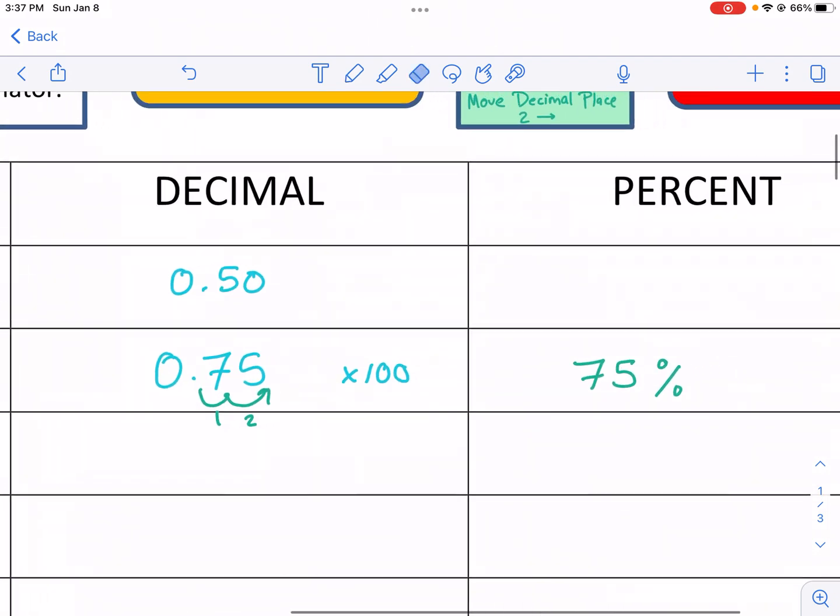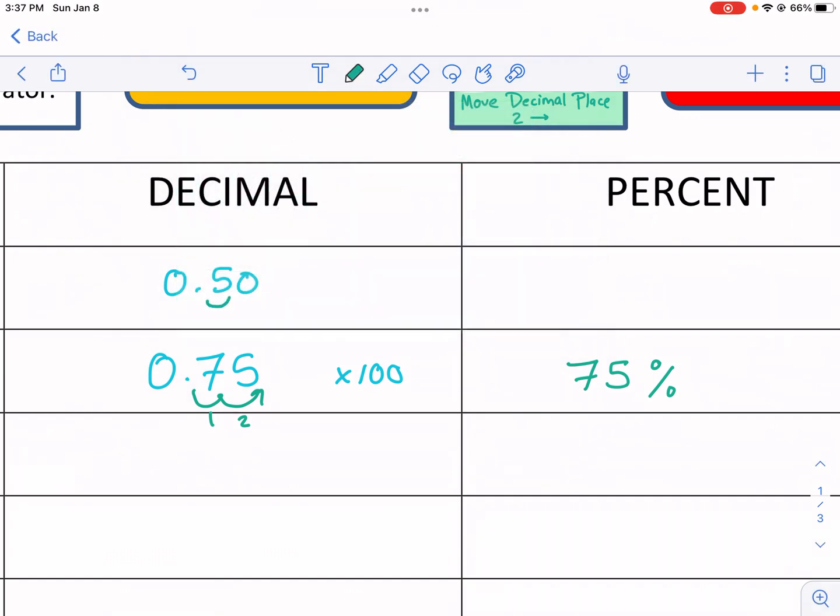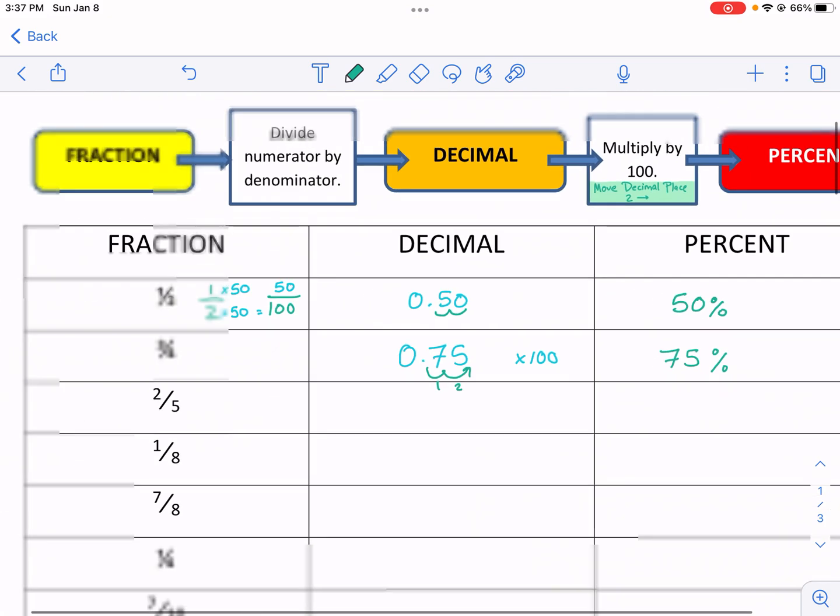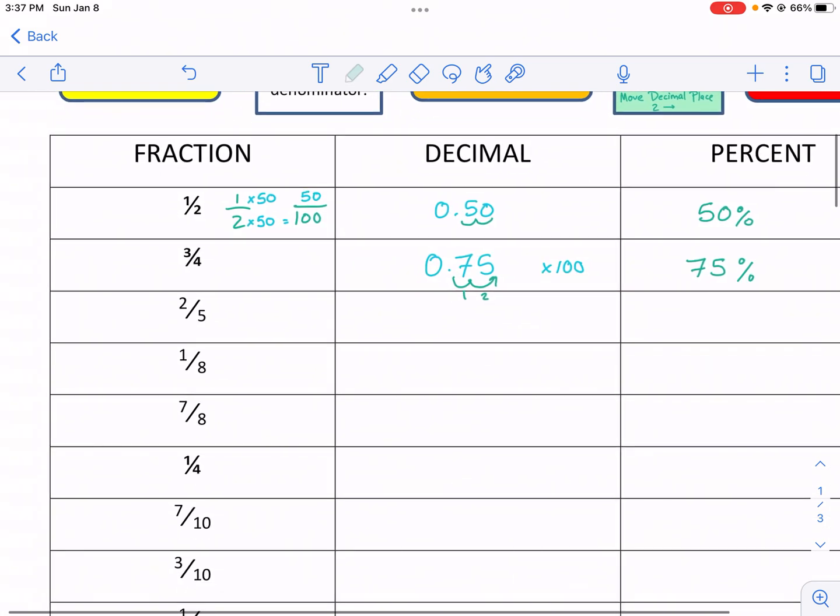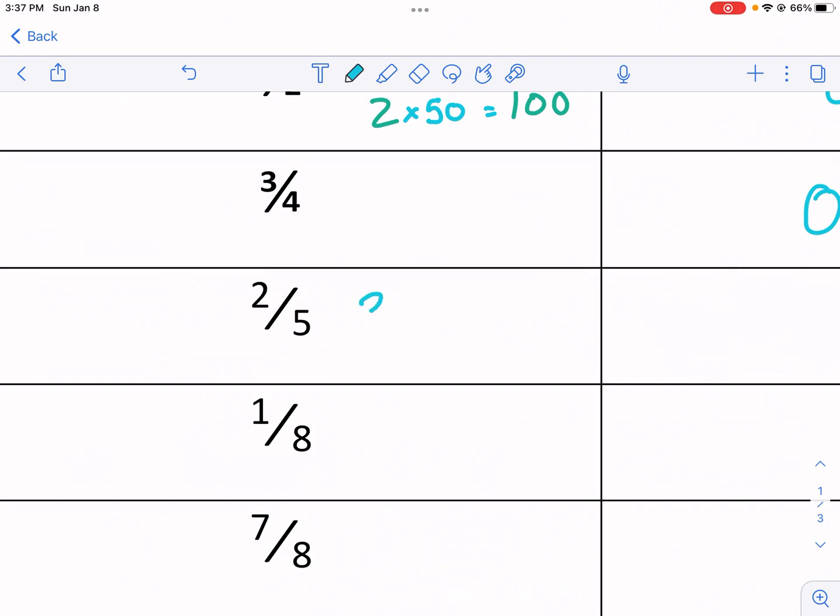Just like this. This is the hundredths place right here, hundredths. And I have 50 of them, 50 one hundredths. And that's how you would say that number. So 0.5. And of course, if I multiply by 100, if I want it to become a percent, I move it over twice to the right. And this number becomes 50%. So I have 50% for this one. And that works for any of these denominators that has a factor that's a factor of 100.